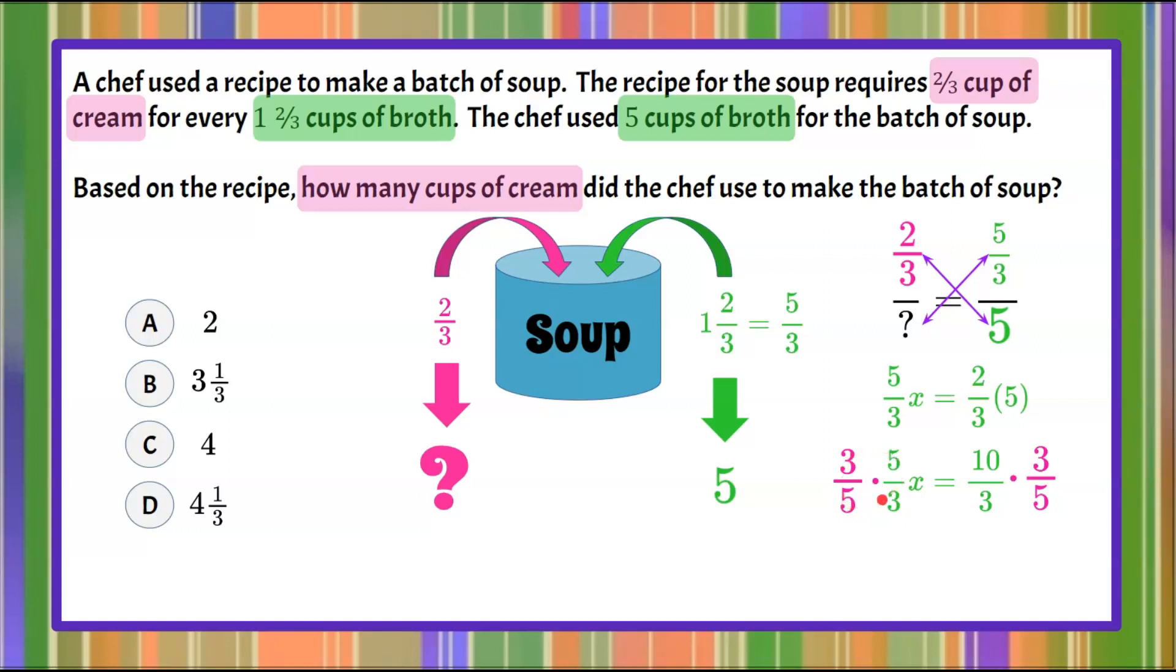So we know that this is one x so we've got x. Now let's simplify the product ten-thirds times three-fifths. We have a common factor between the numerator and denominator. Three divided by three would be one so that leaves us with our x equals ten over five and ten over five or ten divided by five is two.